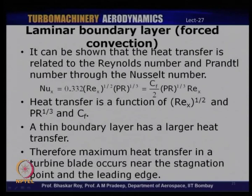Interestingly, a thin boundary layer has a larger heat transfer — the thinner the boundary layer, the higher the heat transfer, because there is less buffer separating the surface from the free stream. Therefore, the maximum heat transfer occurs at the stagnation point, where the boundary layer thickness is close to zero. That is where the boundary layer begins development, and since there is no buffer between the free stream at high temperature and the surface at lower temperature, the heat transfer rate is maximum — which explains the high heat transfer at the stagnation point that we saw in the heat transfer distribution around the blade surface.